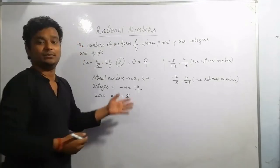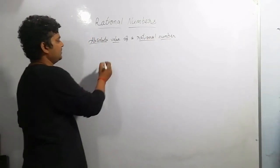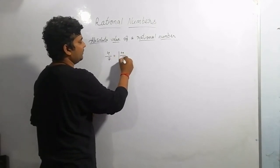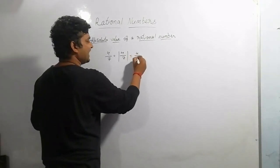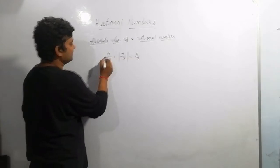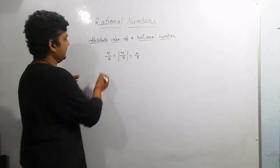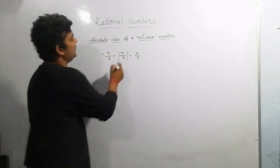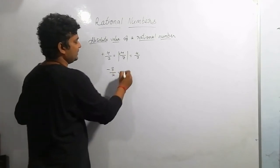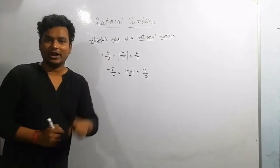Now coming to the absolute value of a rational number. To find the absolute value, we find the modulus of the number, which removes the sign. For example, the absolute value of 4 by 7 — since a plus sign is hidden — gives 4 by 7. If we have minus 3 by 2, then the mode of minus 3 by 2 gives 3 by 2. In absolute value, you simply remove the sign — that is the absolute value.